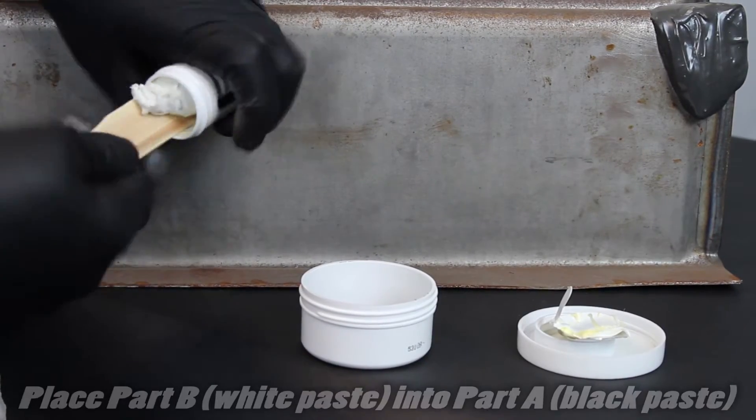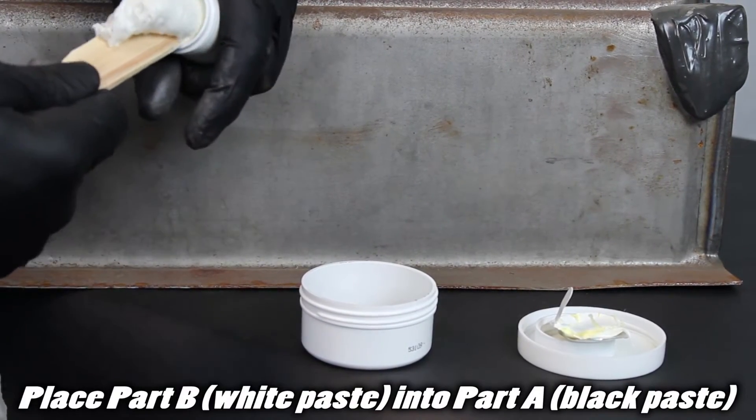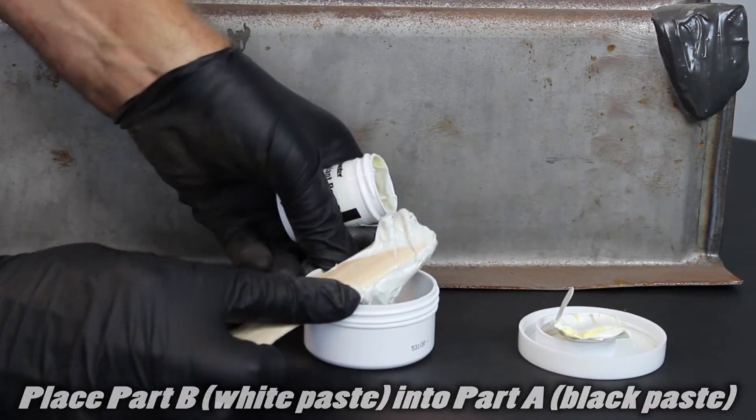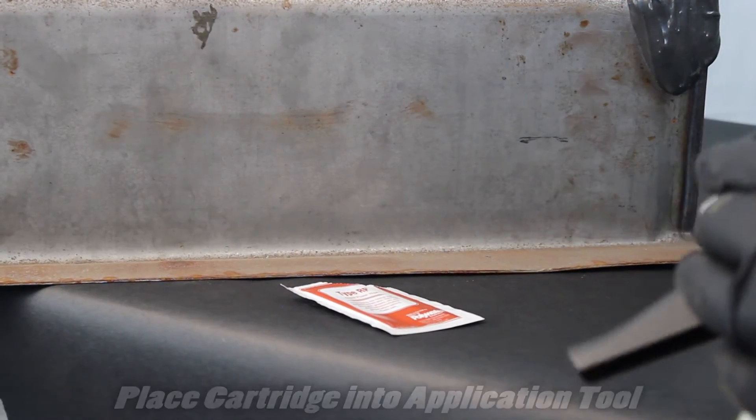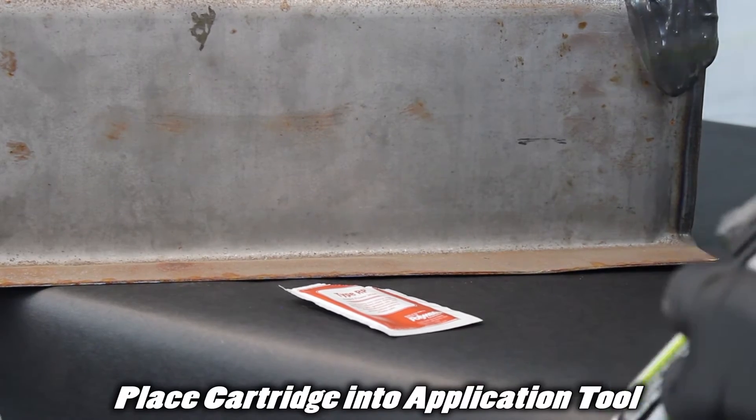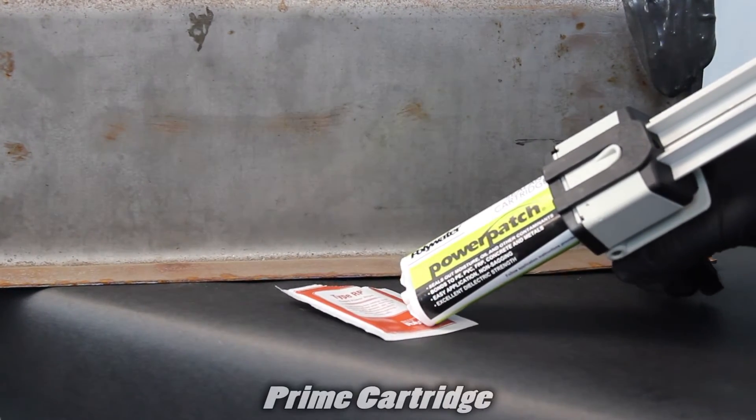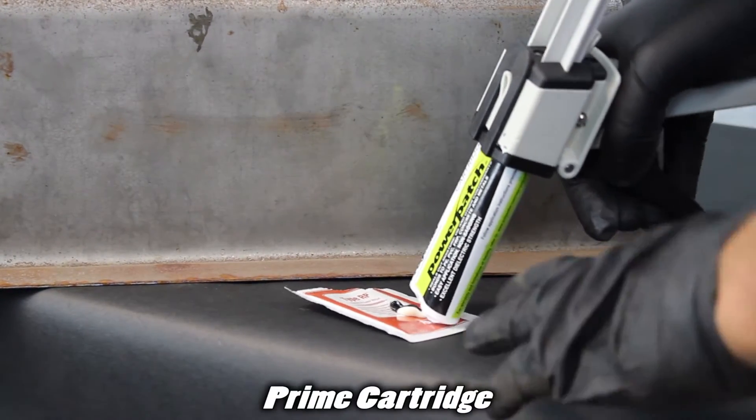Mix cups by placing part B, white paste, into part A, black paste. For the cartridge, place cartridge into the tool. Prime cartridge so both the white and black materials come out.